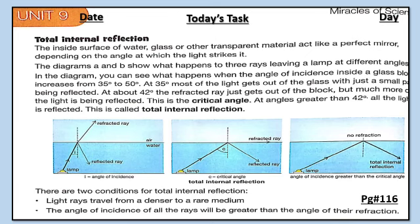Dear students, now open your science book and come to page number 116. The topic is total internal reflection. The inside surface of water, glass, or other transparent material acts like a perfect mirror, depending on the angle at which the light strikes it.